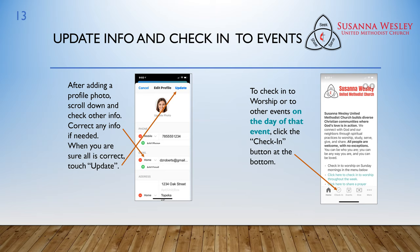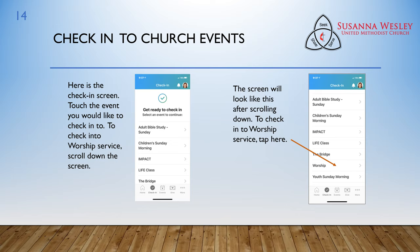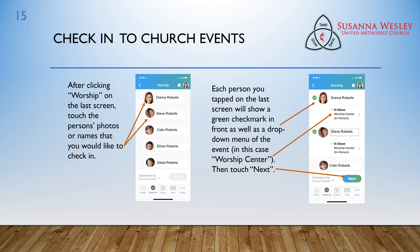To check into worship or to other events on the day of that event, click the Check In button at the bottom. Here is the Check In screen. Touch the event you would like to check into. To check into worship service, scroll down the screen. The screen will look like this after scrolling down. To check into worship service, tap Here. After clicking Worship on the last screen, touch the person's photos or names that you would like to check in. Each person you tapped will show a green check mark in front, as well as a drop-down menu of the event — in this case, Worship Center. Then touch Next.